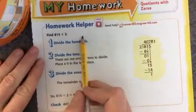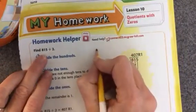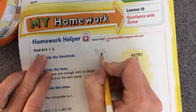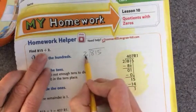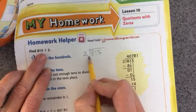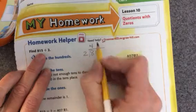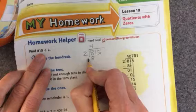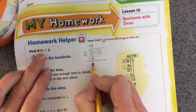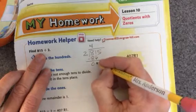Let's look at the homework helper as some practice here. So if I have 815 and I divide by 2, the first thing I'm going to ask myself is how many times will 2 go into 8? I know that 2 times 4 equals 8, so I'll put 4 up here at the top. 2 times 4 is 8. Now I'll subtract. 8 minus 8 equals 0. My next step is to bring down the next number, which is a 1.